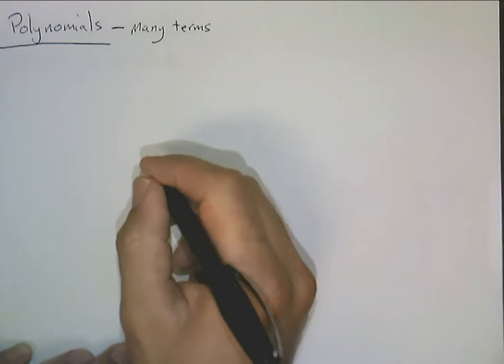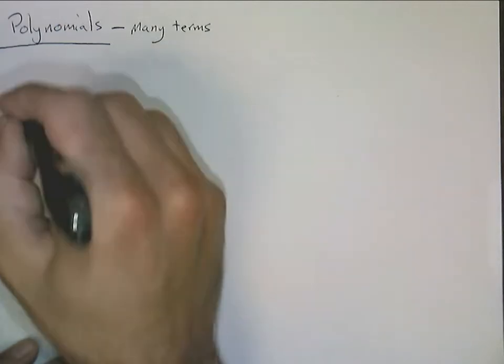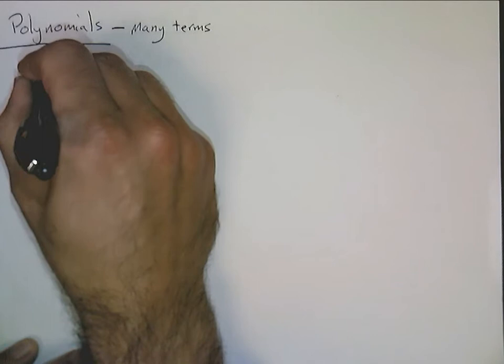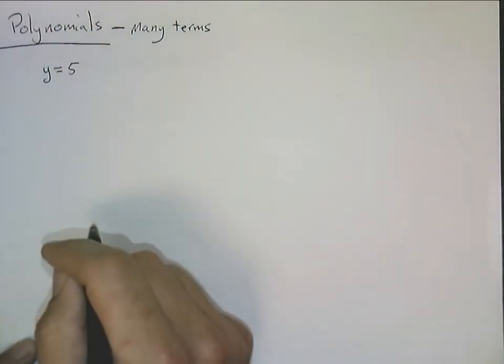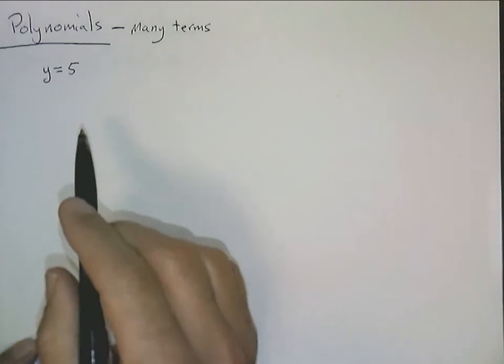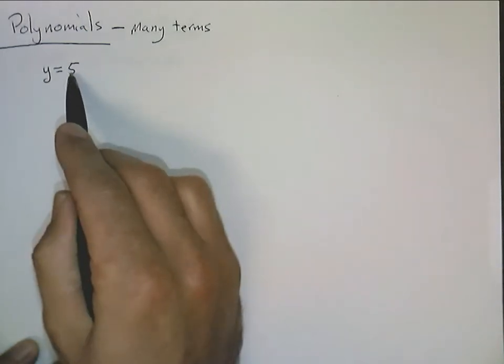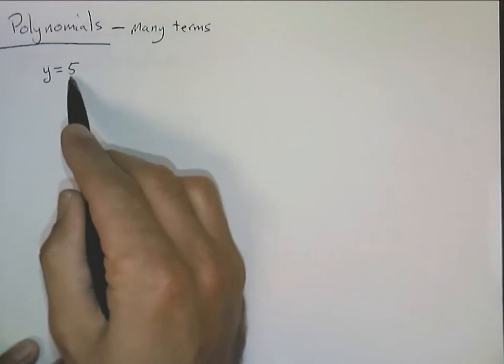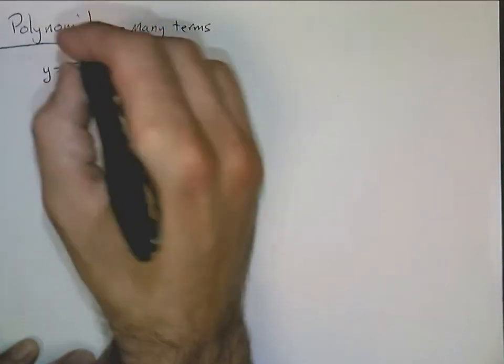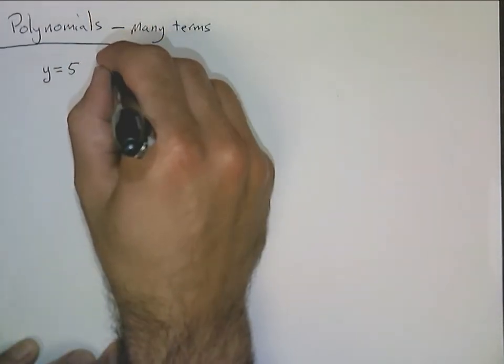And so if we look at some simple examples that we've already looked at so far, something like y equals 5. That's actually a polynomial. There is one term here, 5. Now, this term does not have another variable in it, no independent variable, no x, so therefore this thing is never changing. So what we call here, this thing is called a constant polynomial.